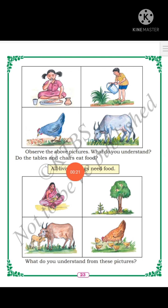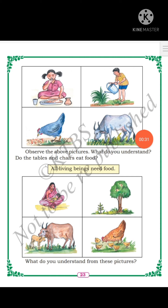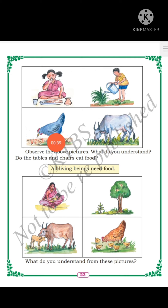Observe the above pictures. What do you understand? Do the tables and chairs eat food? Here, what are the pictures you can see? You can see the girl is eating food, the boy is watering the plants, and the chicks and hen is eating the grains and the cow is eating the grass.